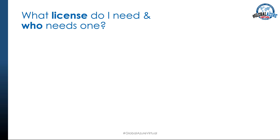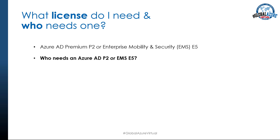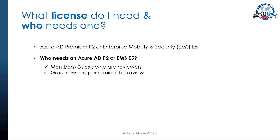What type of license do you need to use Azure Access Reviews, and especially who's going to need one? To use Azure Access Reviews you need an Azure AD Premium P2, or if you have Enterprise Mobility and Security — aka EMS — you need an E5, because the EMS E5 will give you an Azure AD P2. Now, who needs an Azure AD P2 or an EMS E5? Members or guests who are reviewers, group owners who are performing the review, or users doing a self-review — where every single user will need to have a license.